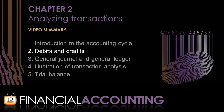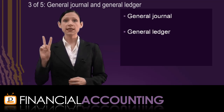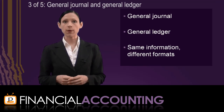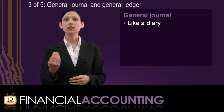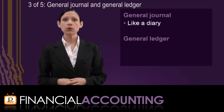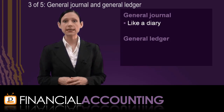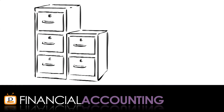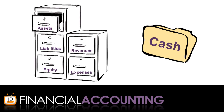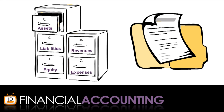Now that we've revised the rules of debits and credits, the next section covers the General Journal and General Ledger. Remember, these are two different documents — they summarise the same information but in different ways. The General Journal is like a diary that records the transactions of the business in chronological order. The General Ledger is the record that contains a collection of accounts of the business and is like a filing cabinet: the drawers represent elements of financial statements such as assets or expenses, the files within each drawer represent specific accounts such as cash or advertising expense, and the pieces of paper inside each file represent the transactions of the business.